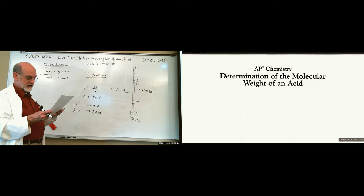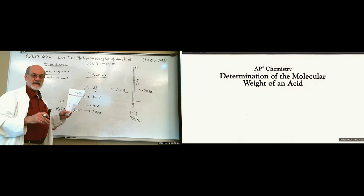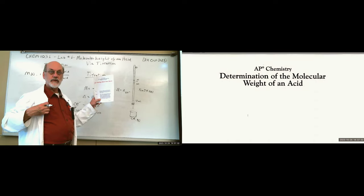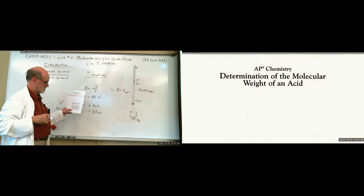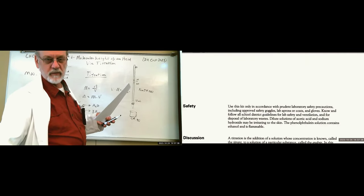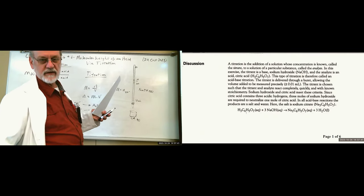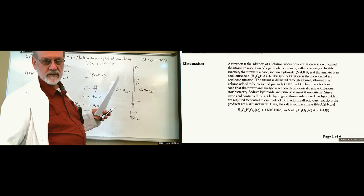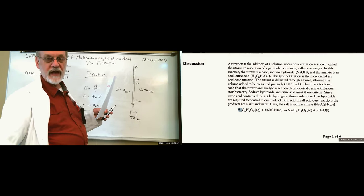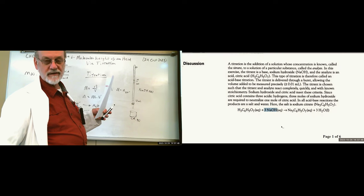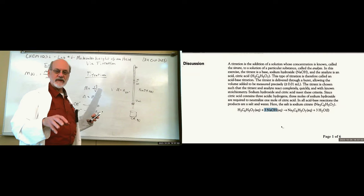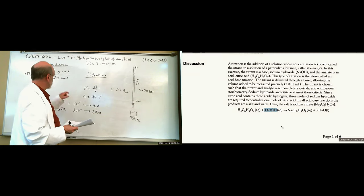You can see that citric acid is an acid because we put three hydrogens first — those are the three hydrogens right there. These three hydrogens are the ones being neutralized by three hydroxyls. That stoichiometry is necessary to get this right.